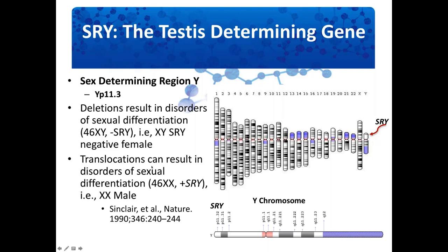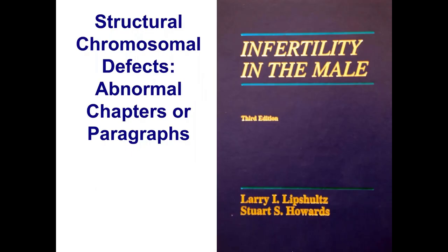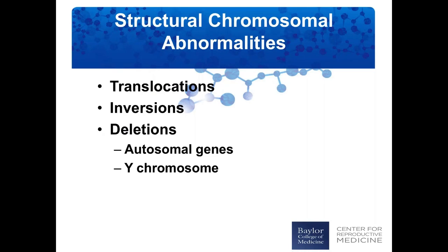Translocations of SRY can result in disorders of sexual differentiation — in this case, a 46XX SRY-positive XX male. Neither of these individuals would have any sperm present on a testis biopsy for use with an assisted reproductive technology. Let's look a little closer at structural defects on the Y chromosome — remember that this would be analogous to abnormal chapters or paragraphs in a book. These abnormalities can be translocations, inversions, or deletions, and can occur on both autosomal chromosomes as well as the sex chromosomes, but we're going to focus on the Y chromosome.